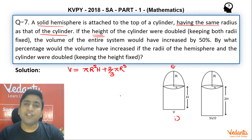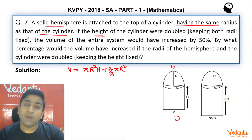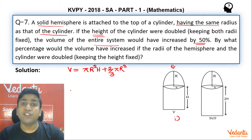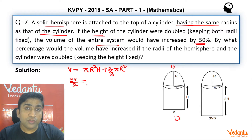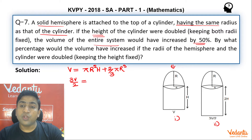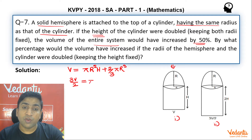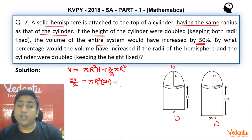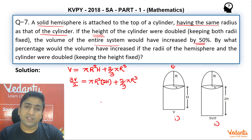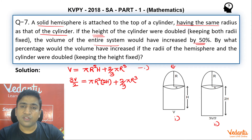If you try to double the height of the cylinder keeping the radii fixed, the question says the volume of the entire system would have increased by 50%. So if the initial volume was V, the new volume is (3V/2). This (3V/2) corresponds to the second case in which the height of the cylinder is 2h and the radius is r. So the new volume is πr²(2h) plus (2/3)πr³ — the hemisphere volume stays the same.